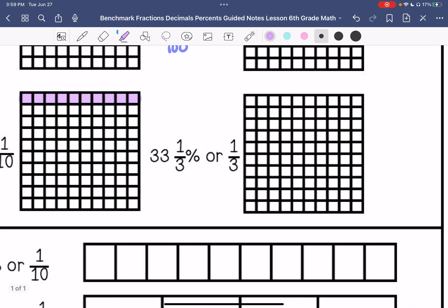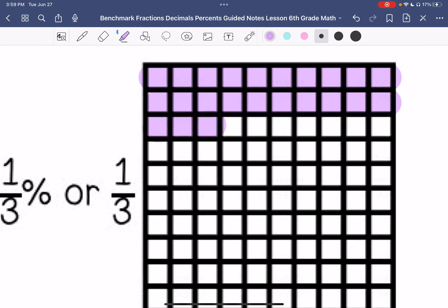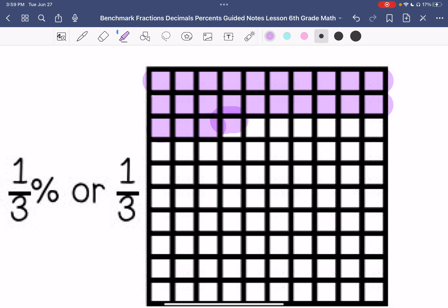And then I have 33 and a third or one-third. So I'm going to shade 33 and a third of a square. There we go.